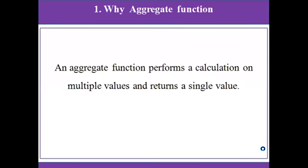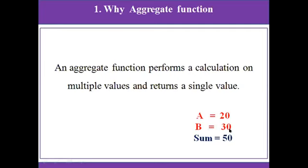Why aggregate functions? An aggregate function performs a calculation on multiple values and returns a single value. For example, here a is equal to 20 and b is equal to 30. The sum value of these two is 50. So multiple values — that is a and b — and sum is the return value. In these cases, we use aggregate functions.